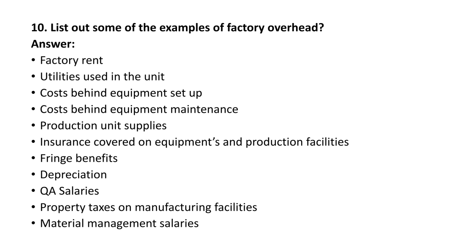Some examples of factory overhead: factory rent — whether you are producing components or not, you must pay the factory rent; utilities used in the unit; cost of equipment setup — infrastructure cost; cost of equipment maintenance; production unit supplies; insurance; fringe benefits; depreciation on equipment and plant; salaries; property taxes on manufacturing facilities; and material management salaries. These are factory overhead, excluding direct labor and direct material cost.